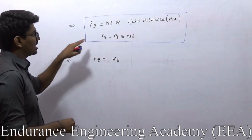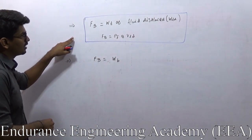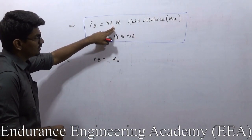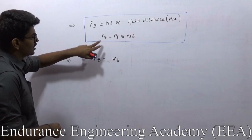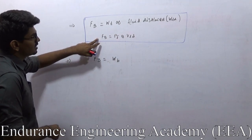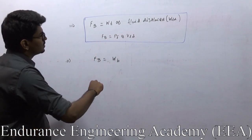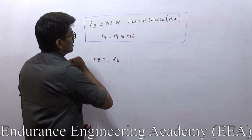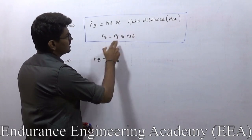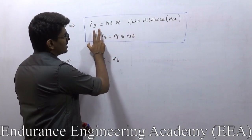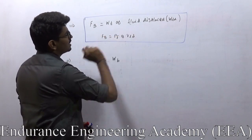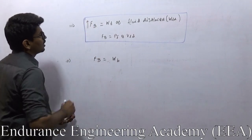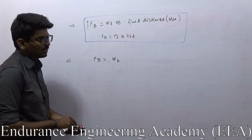From Archimedes' principle, what we got is: buoyancy force equals weight of the fluid displaced, and weight of the fluid displaced is nothing but rho_f·g·V_fd. This is what we got from Archimedes' principle. Buoyancy force will always equal the weight of the fluid displaced, and buoyancy force will always act upward.